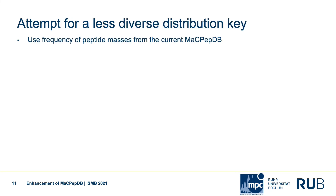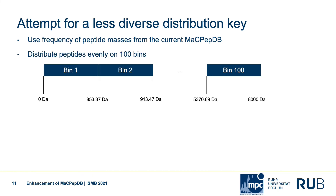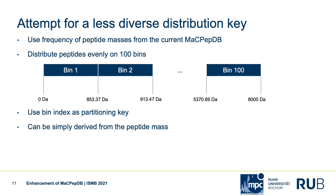Using the frequency of peptide masses from the current MacPeptiDB, it is possible to create a less diverse distribution key by distributing the peptides evenly into 100 bins where the bin boundaries are defined by peptide masses. After binning is complete, the bin index can be used as a less diverse distribution key, which can simply be looked up by peptide mass. It is also possible to recalculate it with more or fewer bins to rebalance the peptides later.